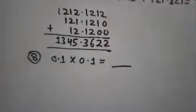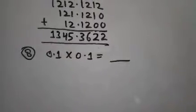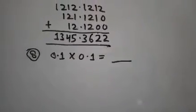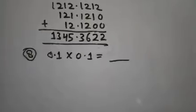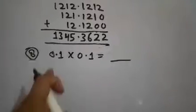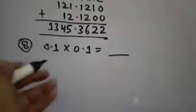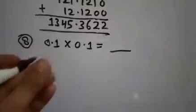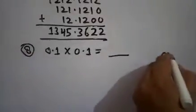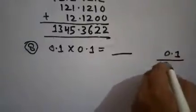Next question: 0.1 × 0.1. Generally we know that 1 × 1 = 1, but with decimal numbers, whenever you get a question like this — what is the value of 0.1 × 0.1 × 0.1 — you can start by finding the product of 0.1 × 0.1.